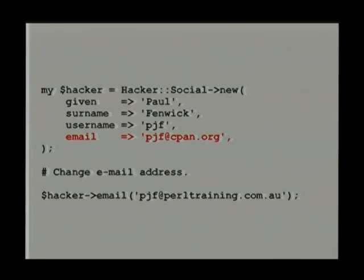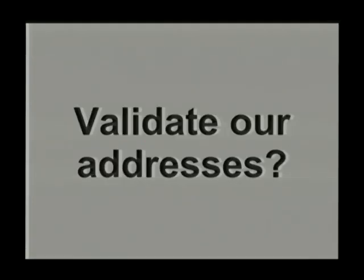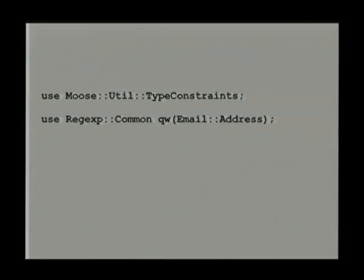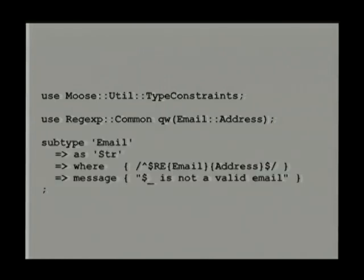Now there's a gotcha — I said my email address was just a string, but I don't want somebody passing in 'toasted cheese sandwich' as their email address. So how do we validate that? I'm going to declare a new type using Moose's type constraint system. It actually comes with a whole bunch of regular ones — numbers, integers, boolean values, references, arrays, and so on. I'm going to leverage that and the Regexp::Common module from CPAN, and make a subtype called 'email.' Email is a subtype of string, so anywhere a string is required, an email can also be supplied.